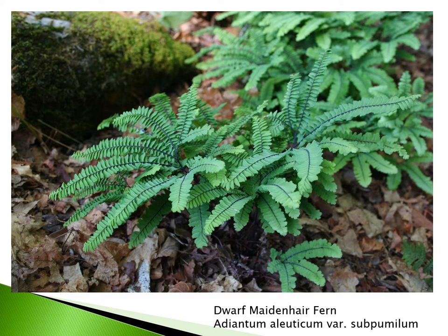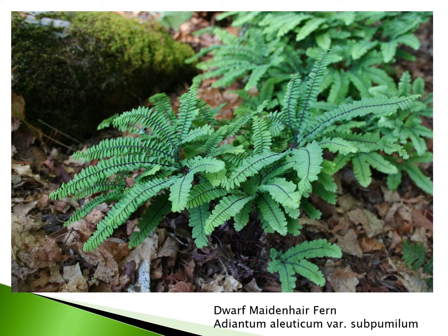Other rock garden species to consider include the dwarf maidenhair fern, Adiantum aleuticum variety subpumilum. Much like our common maidenhair fern in New England, this one forms the same growth habit and pattern, yet this plant is only six inches tall — a wonderful species for the rock garden. It prefers a more neutral soil. My trick is to use marble chips dug into the soil prior to planting — they like that additional limestone and really thrive. They will not tolerate a more acidic soil, so please keep that in mind.